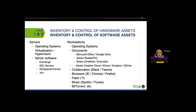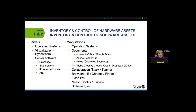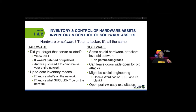For software assets: operating systems for servers and workstations, virtualization and hypervisors like ESXi and Hyper-V, server software like Exchange, SQL, and IIS, document readers like Office and Google Docs, Adobe, creative cloud, collaboration tools like Slack and Teams, browsers, and if you're still using Flash on your network — shame on you. Also music players like Spotify, BitTorrent, etc.